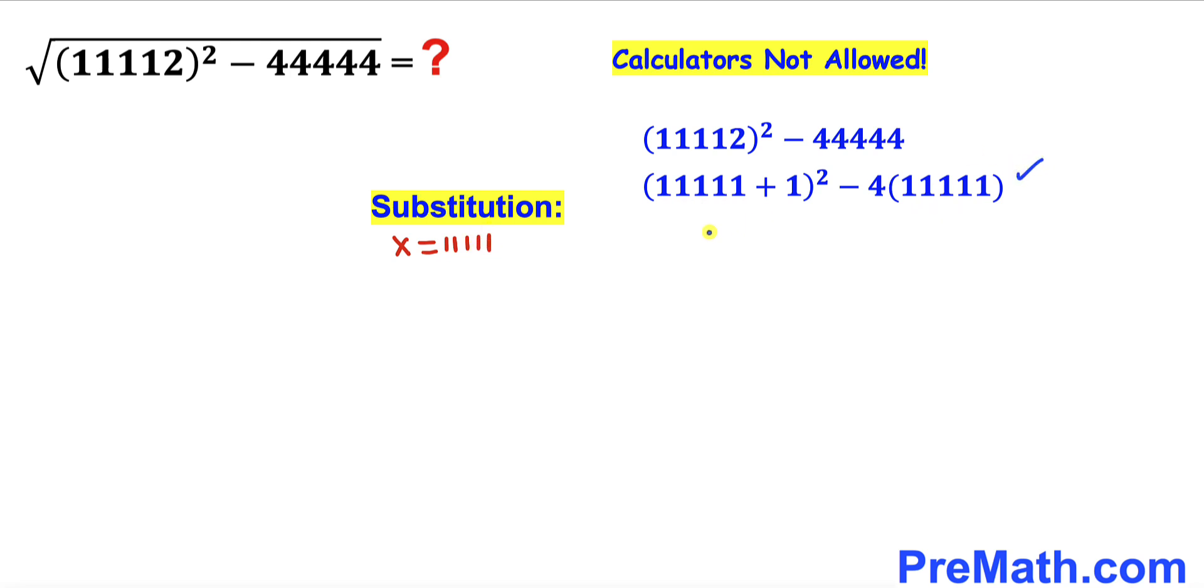So therefore this expression could be written as (x + 1)² minus 4x. Now let's recall this famous identity: (a + b)² equals a² + 2ab + b². I'm going to apply it on this binomial.